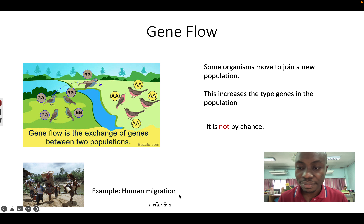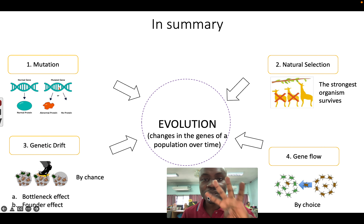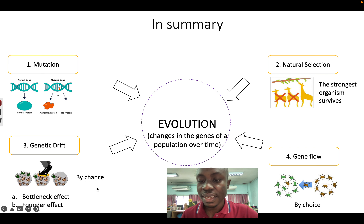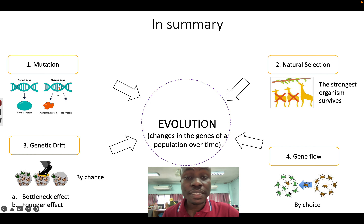In summary, there are four things which can cause evolution. We have mutation and natural selection, where the strongest organisms survive. Genetic drift — which has two types: bottleneck effect and founder effect — is just by chance; the lucky one will survive. And lastly, gene flow is by choice — one organism decides to move to a new group of organisms. Thank you very much. I hope this is helpful.